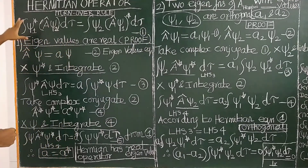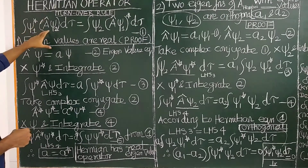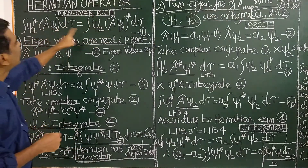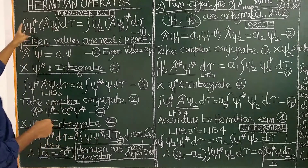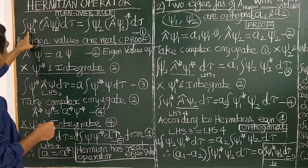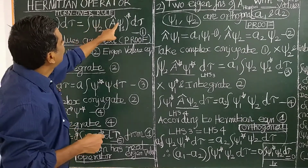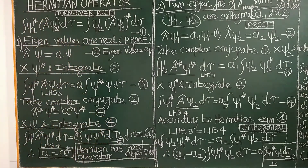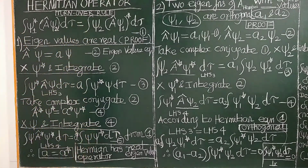Let us write the equation: integral psi-1-star bracket A-cap psi-2 d-tau. Now, the turnover rule states that psi-1-star can be brought over, so A-cap psi-1-star and psi-2 change over, giving integral psi-2 (A-cap psi-1)-star d-tau. This relationship is called the turnover rule. Any operator which satisfies this relation is called a Hermitian operator.